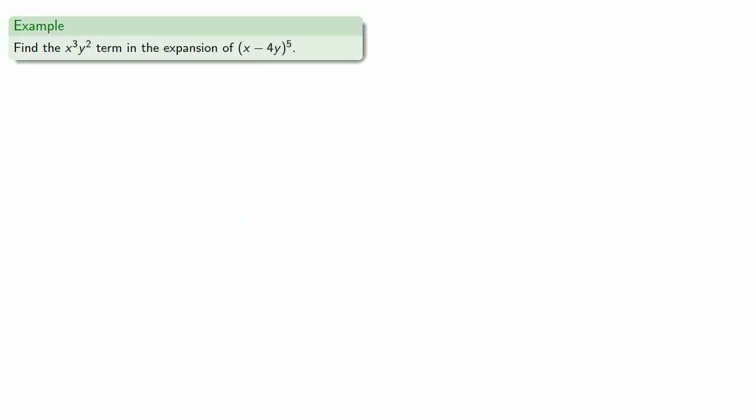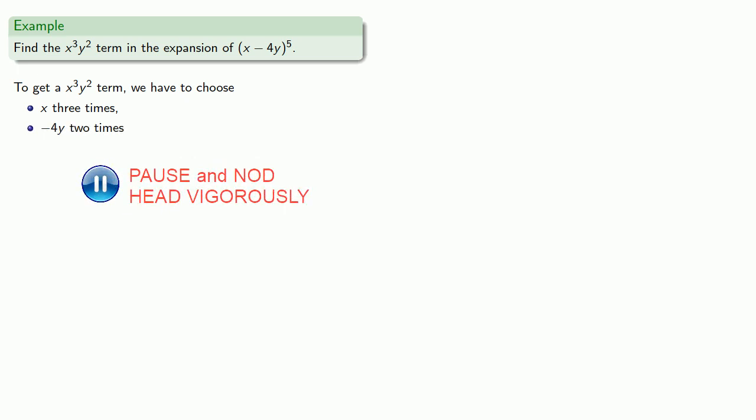And our binomial could include a variable. So let's find the x³y² term in (x - 4y)⁵. To get an x³y² term, we have to choose x three times and (-4y) two times. So that's (5 choose 3) × x³ × (-4y)². And so our term will be 10 × x³ × 16y² = 160x³y².